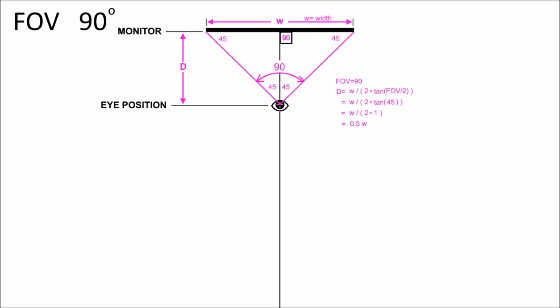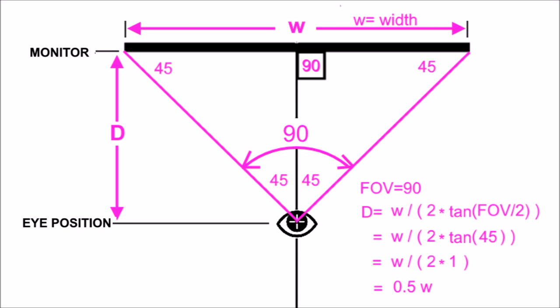There's only one correct distance from the screen that will give you that perfect angle. In this view you can see that the distance for a 90-degree field of view is 0.5 times the width of the monitor. The eye needs to be that distance from the monitor, centered on the monitor, and looking perpendicular to it. That's the perfect eye position where what you see will match what you should see with the naked eye.